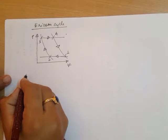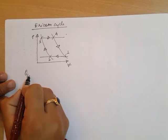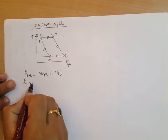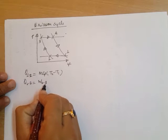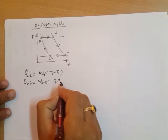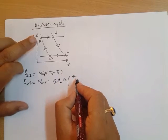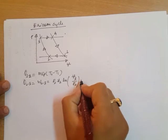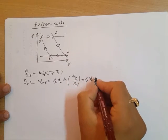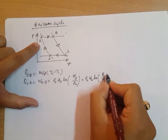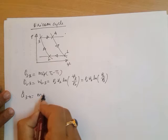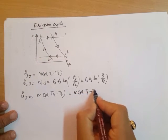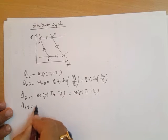To find the efficiency of this cycle, we analyze each heat interaction. Q12 is a constant pressure process, so it equals mCp(T2 - T1). Q23 is an isothermal process, so it equals the work interaction: P2·V2·log(P2/P3). Q34 equals mCp(T4 - T3), and since T4 equals T1 and T3 equals T2, this becomes mCp(T1 - T2). Q41 is isothermal, so it equals the work interaction.